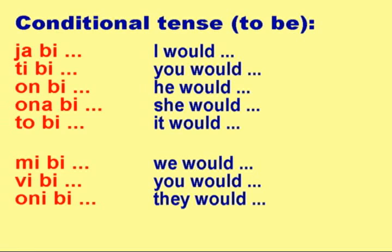Conditional tense — To be: YA BI, TI BI, ON BI, ONA BI, TO BI, MI BI, VI BI, ONI BI.